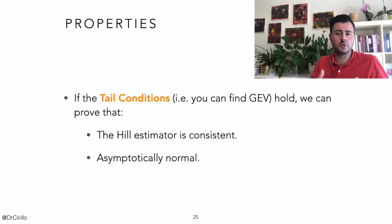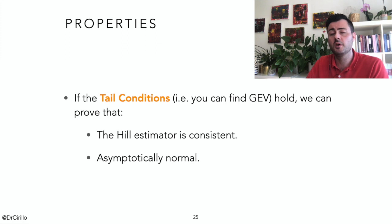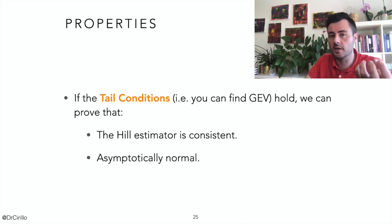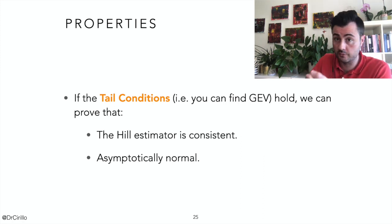The Hill plot is extremely useful — it both identifies the possible threshold telling us how many observations will constitute our tail, and gives us an educated guess about the tail parameter alpha or Xi. If some general requirements are met — typically when you are considering a GEV with Xi positive — the Hill estimator is essentially the maximum likelihood estimator; you can show they coincide. The Hill estimator is consistent and asymptotically normal, so it has many wonderful properties, making it a very useful tool for tail analysis.